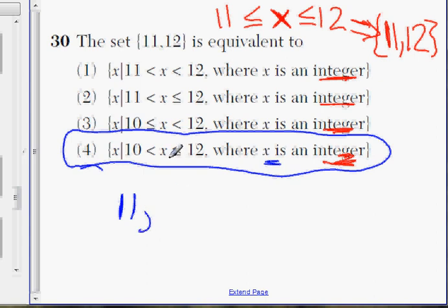So the first number greater than 10 has to be 11. It's less than or equal to 12, the next one is 12. We can't go to 12.5, we can't go to 13. And that's it.